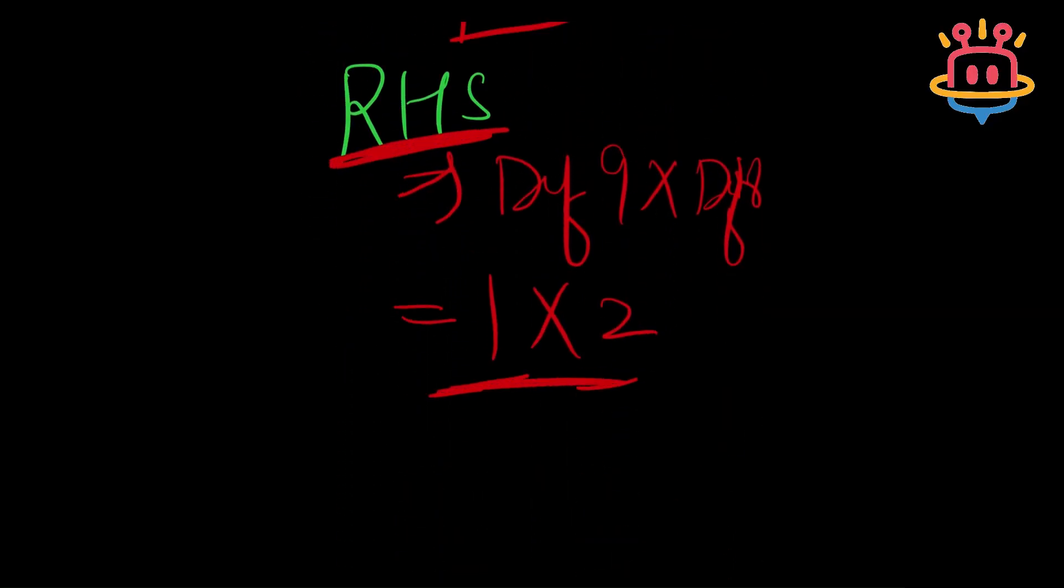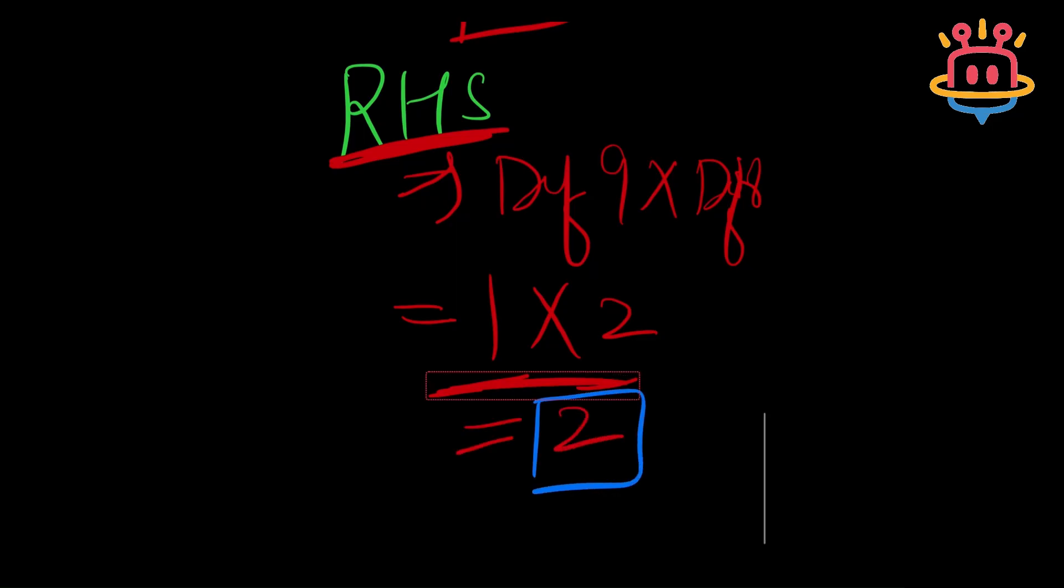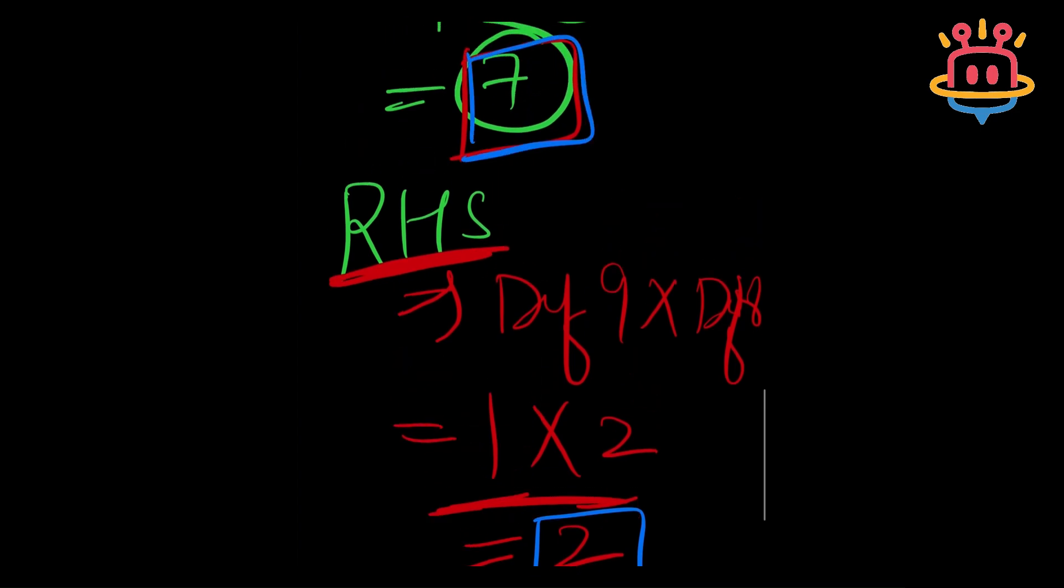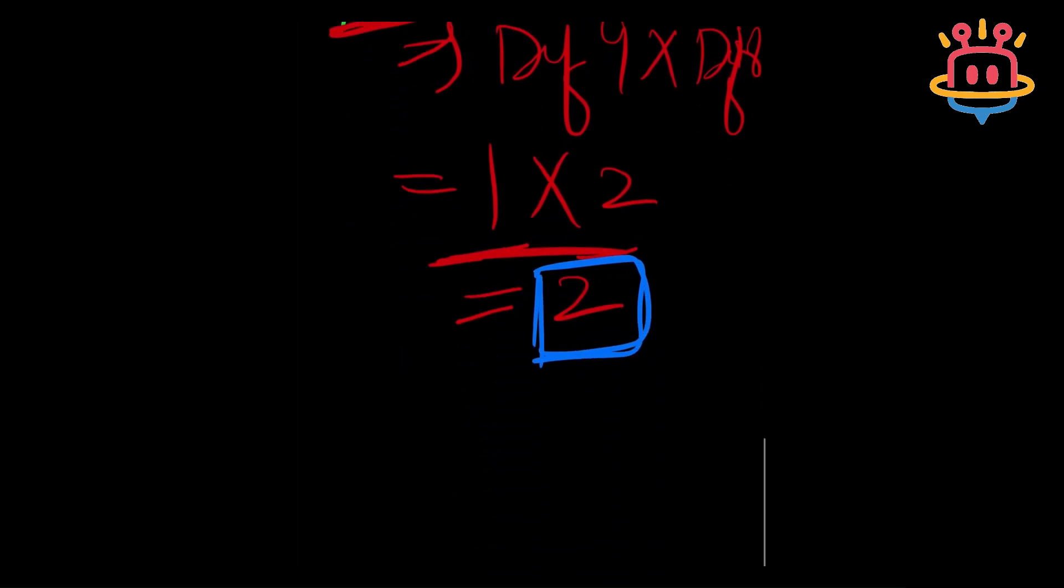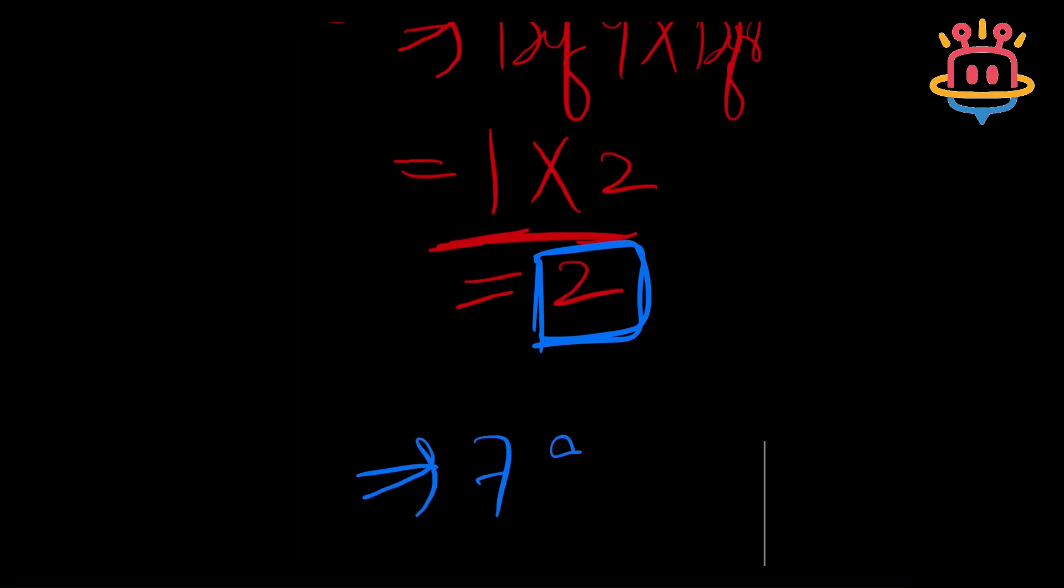Now, we are here with our final answer. We are almost there. So, what we will do is, we will put both of these terms together. So, 7 and 2. We will put both of them together. Our answer is 72.